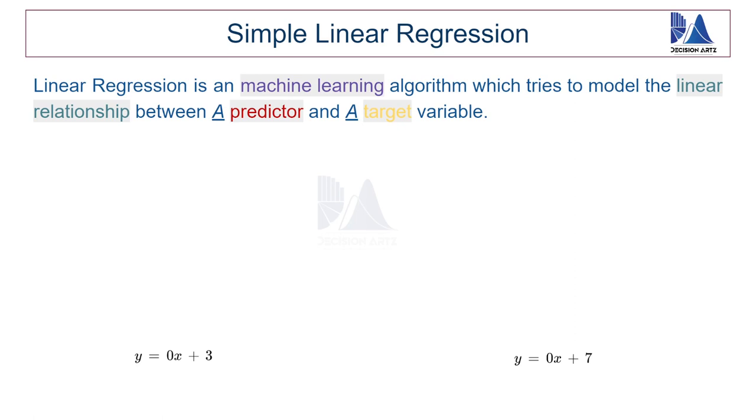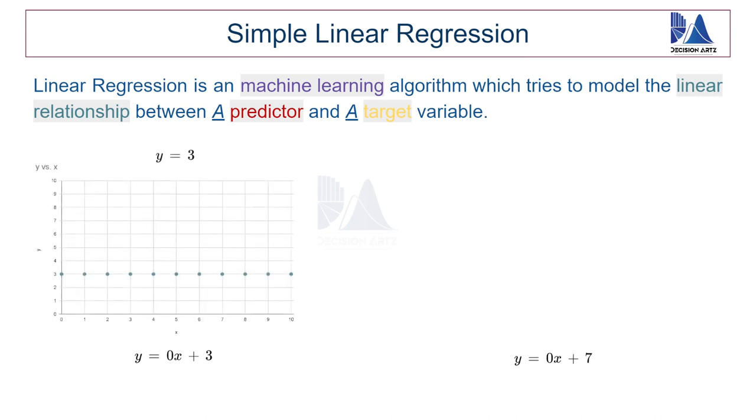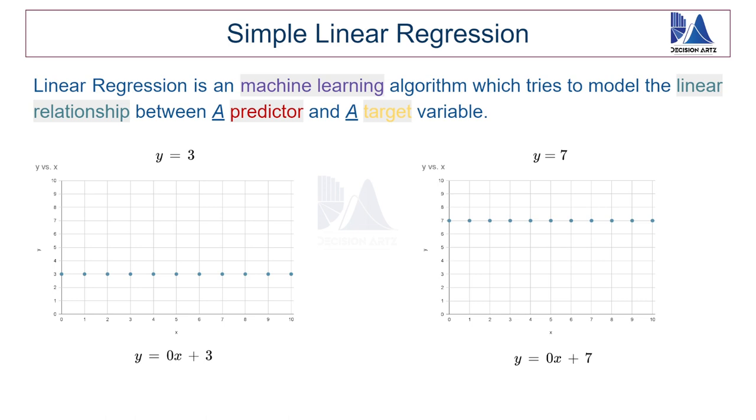So I have two equations here. The scatter plot for y equal to 0x plus 3 or y equal to 3 is a straight line parallel to the x axis at y equal to 3. And similarly y equal to 0x plus 7 is another parallel line to the x axis which cuts the y axis at y equal to 7. But what exactly differed here? Well, you can see that the line has vertically shifted. So the constant factor here is used to shift the line upward or downward. So it vertically shifts the line. And the other factor that it gives is precisely at what point the line cuts the y axis.